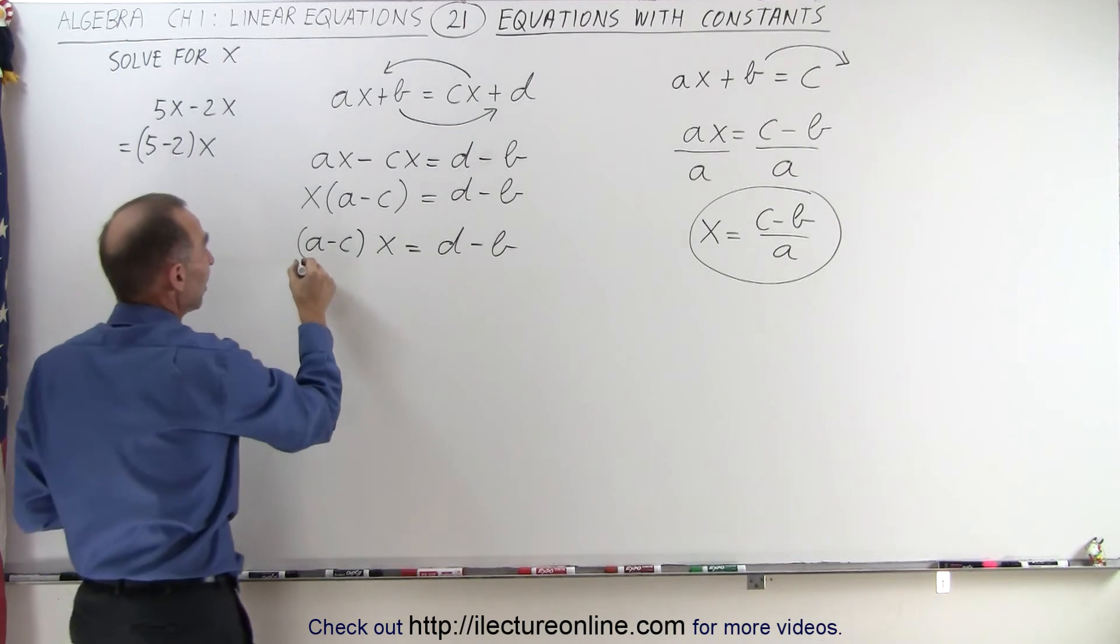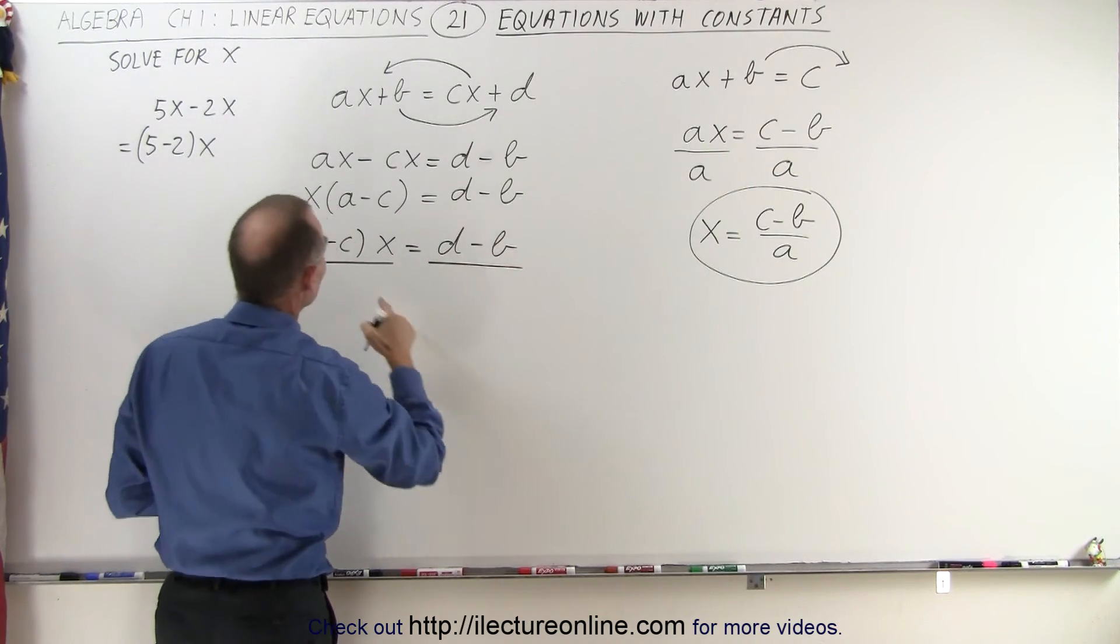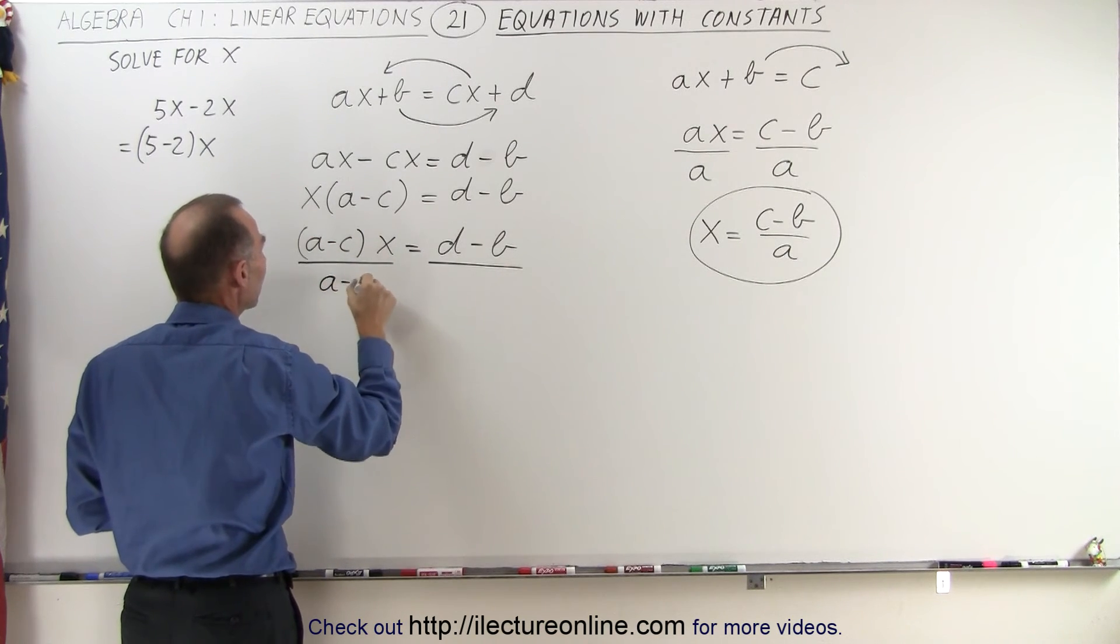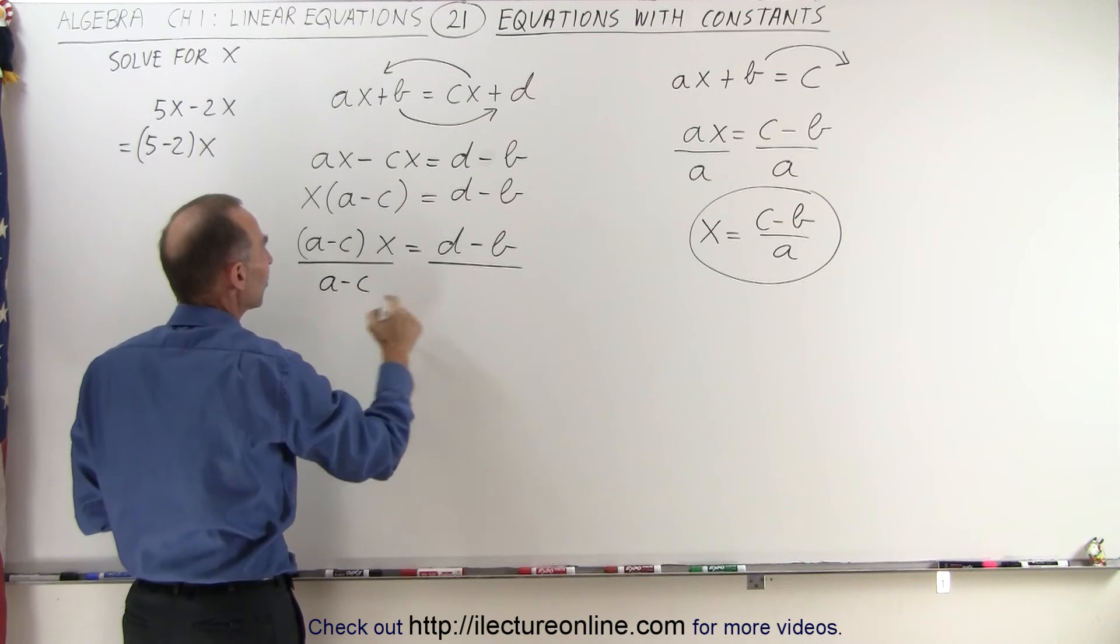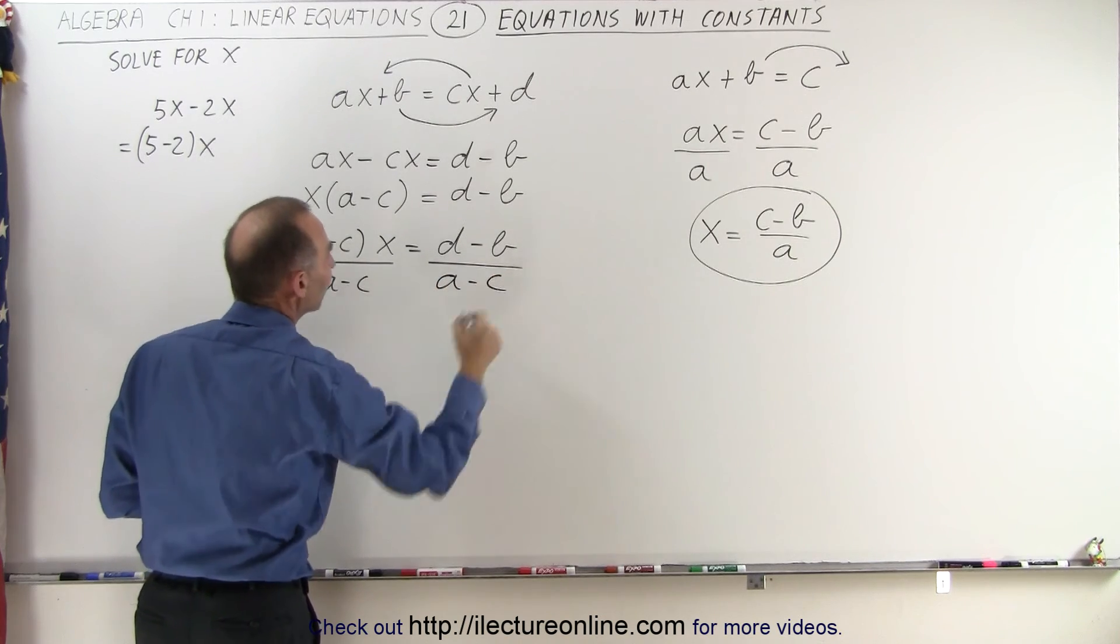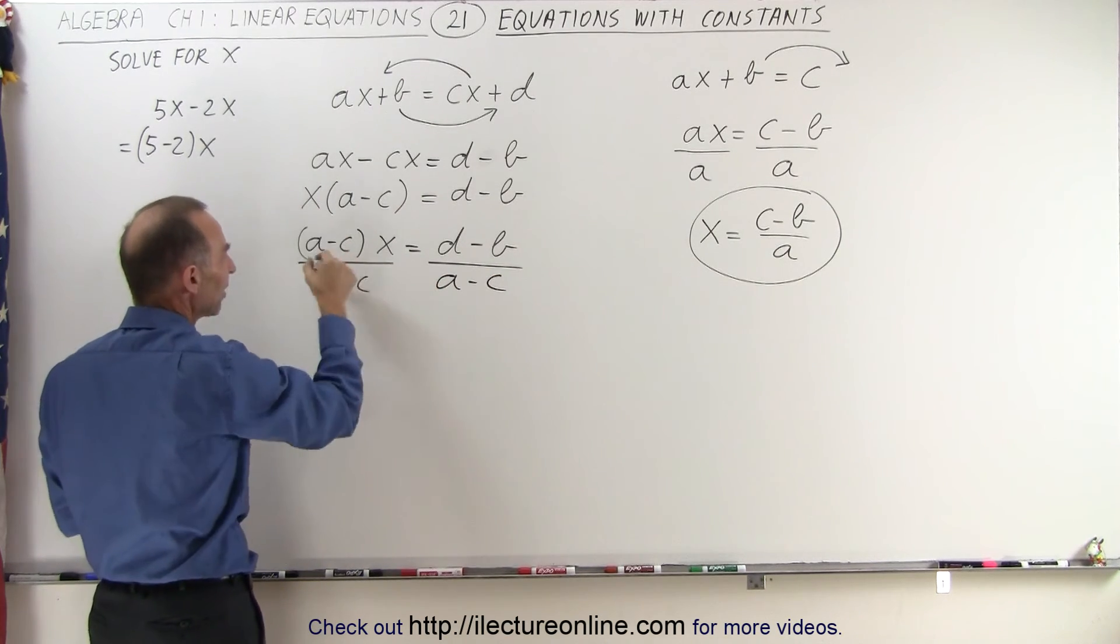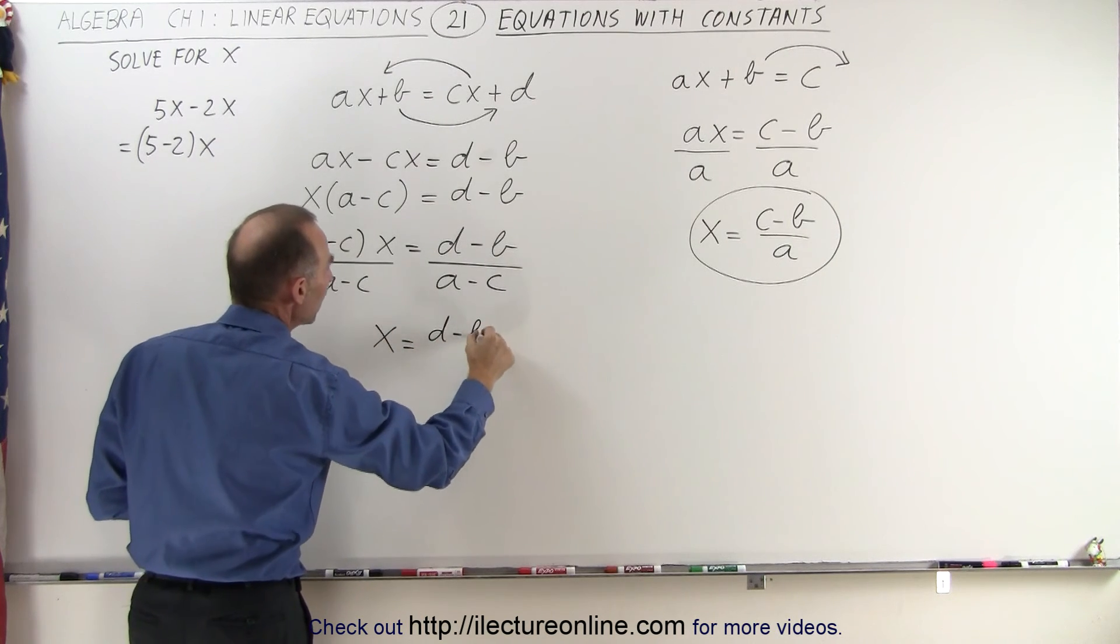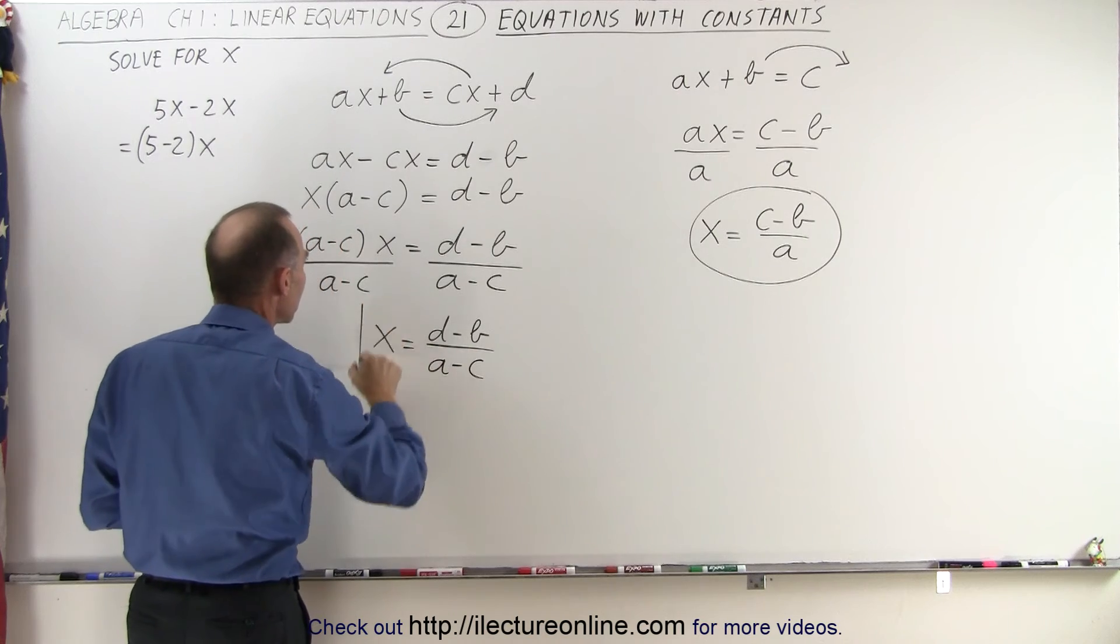The last thing we want to do is divide both sides of the equation by the numerical coefficient in front of the variable X. So we divide the left side by A minus C and we divide the right side by A minus C. The A minus C's cancel and we end up with X is equal to D minus B divided by A minus C.